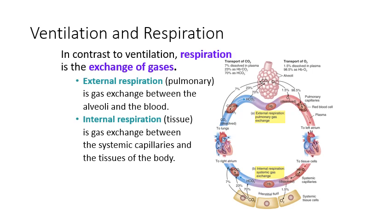Moving on to respiration — the exchange of gases. You actually have gas exchange happening in two different ways. External respiration is the exchange of gases between the alveoli and the blood: inhaled gases go into the alveoli and cross over into the bloodstream — called external because it's air from the outside world. Internal respiration is what happens at the level of the tissues: after oxygen has been brought into the bloodstream and travels throughout the body, when it reaches a capillary bed, oxygen diffuses from the capillaries into the tissues to feed them.